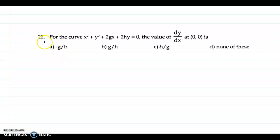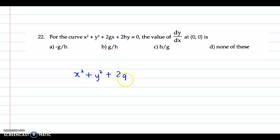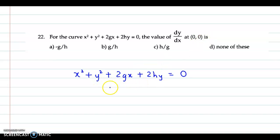We now discuss question number 22. For the curve x squared plus y squared plus 2gx plus 2hy equal to 0, the value of dy by dx at x equal to 0 is. Now this is an implicit function, so we differentiate with respect to x.